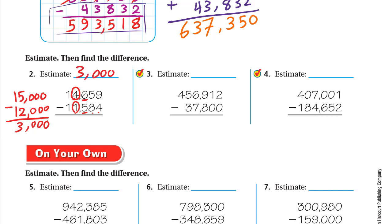Now let's subtract exactly. Nine minus four is five. Five minus eight can't be done: six becomes five, five becomes fifteen; fifteen minus eight is seven. Hundreds: five minus five is zero. Thousands: four minus one is three. Ten-thousands: one minus one is zero. The answer is 3,075. It's close to three thousand, so our answer is reasonable.